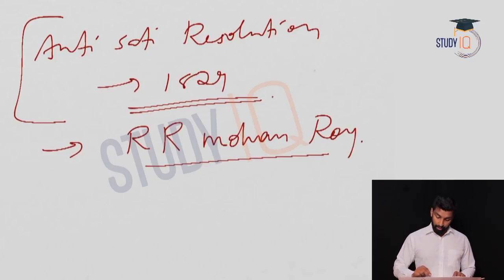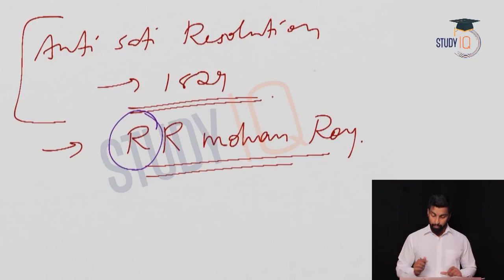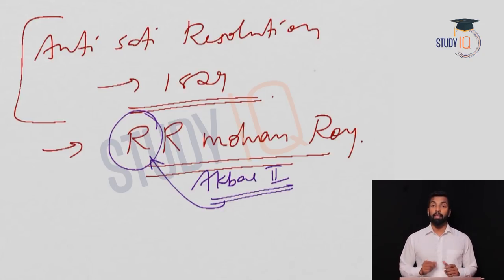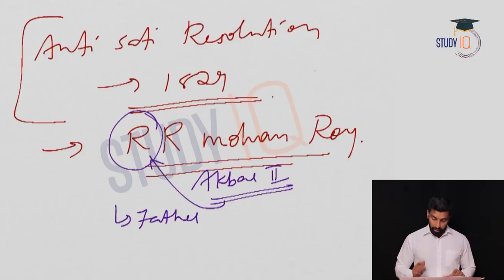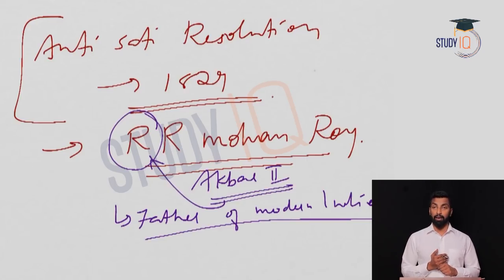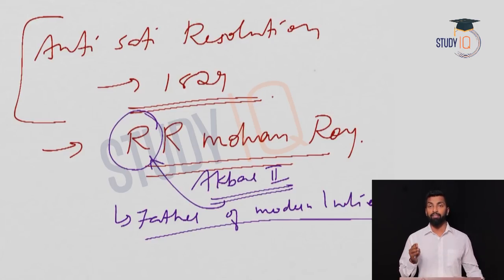Raja Ram Mohan Roy was the Indian activist who actively supported passing the Anti-Sati Resolution. 'Raja' was a title given to him by Akbar II — he was not a raja of any particular country. He is popularly known as the Father of Modern India. In a 2012 question, Lord Dalhousie could also be called the Father of Modern India, as we'll discuss railways, post and telegraph, hill stations, doctrine of lapse, and education reforms under his tenure.